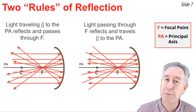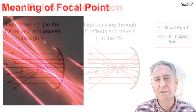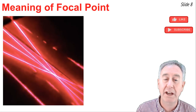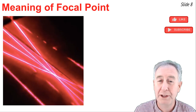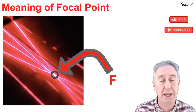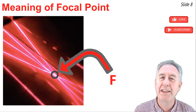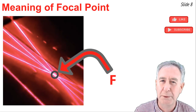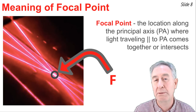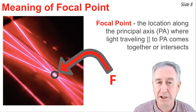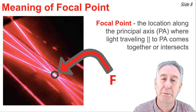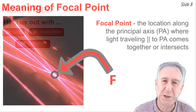This photo shows four laser light lines traveling toward a concave mirror. On the way to the mirror, they travel parallel to the principal axis. Upon reflection, you can see they all pass through the same point — that point is the focal point. This gives us a new definition of focal point: the point lying along the principal axis where light incident to the mirror and traveling parallel to the principal axis converges.